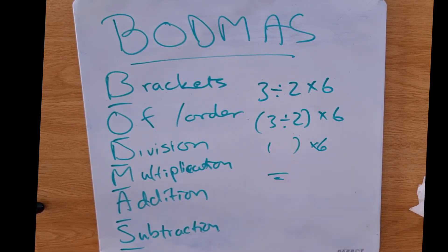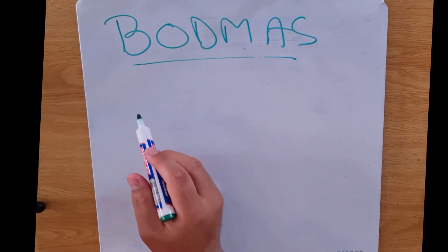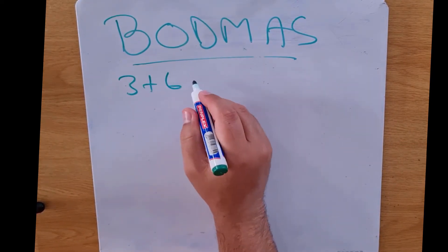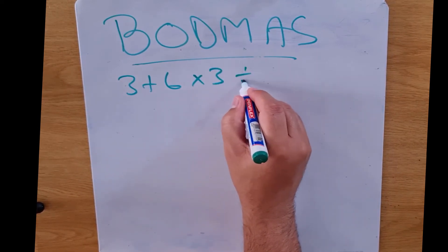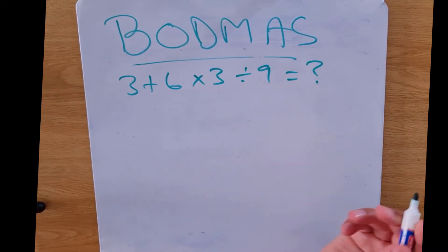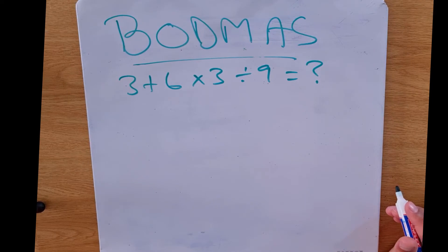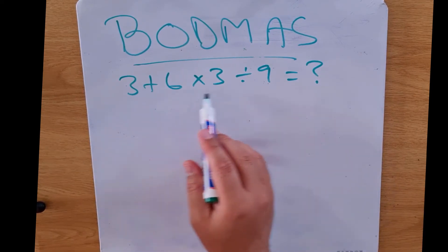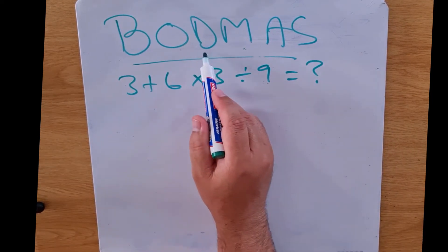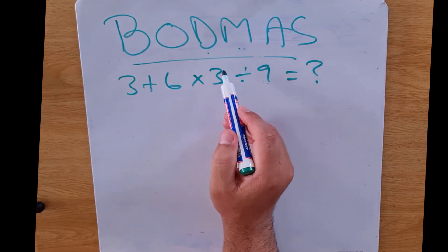So I hope that helps you with BODMAS, but maybe let's just look at one or two examples. Let's look at an example: 3 plus 6 multiplied by 3 divided by 9 equals, well we're going to find out. If we look at this according to BODMAS, we see that we've got division first and multiplication second.